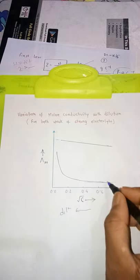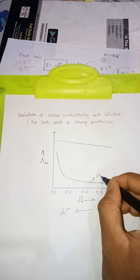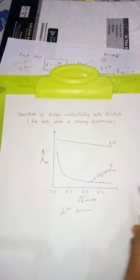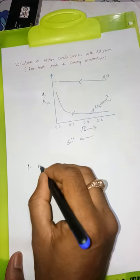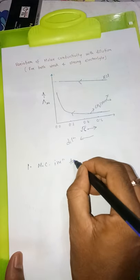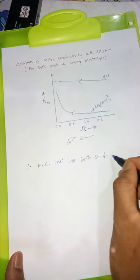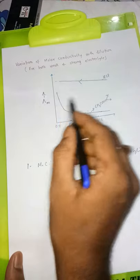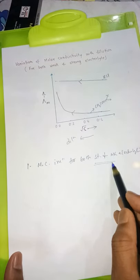This graph shows the variation of molar conductivity with dilution for both weak and strong electrolytes. Molar conductivity is on the y-axis increasing, and concentration is on the x-axis — concentration increases in this order, so dilution takes place going the other way. One important point students should remember: molar conductivity increases for both weak and strong electrolytes. From this graph, we know the molar conductivity increases from right to left.